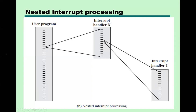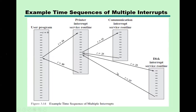In multiple interrupt: the user program is executing, meanwhile an interrupt is generated for the printer, and within the printer handling there are two interrupt signals generated — one for the printer interrupt service routine and one for the disk interrupt service routine.